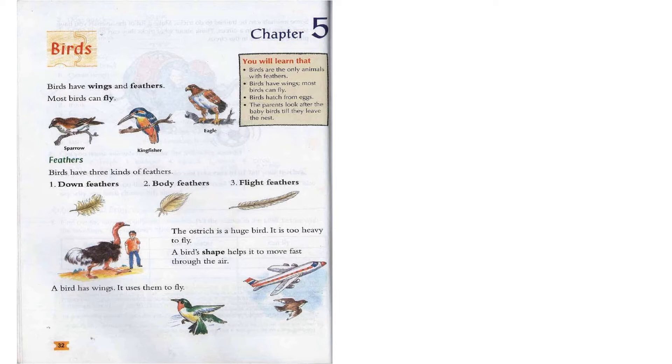Now, the feathers. Birds have three kinds of feathers. Number one is down feathers. Number two is body feathers. And number three is flight feathers. If you look at their body you will find three different kinds of feathers: down feathers, body feathers, and flight feathers.